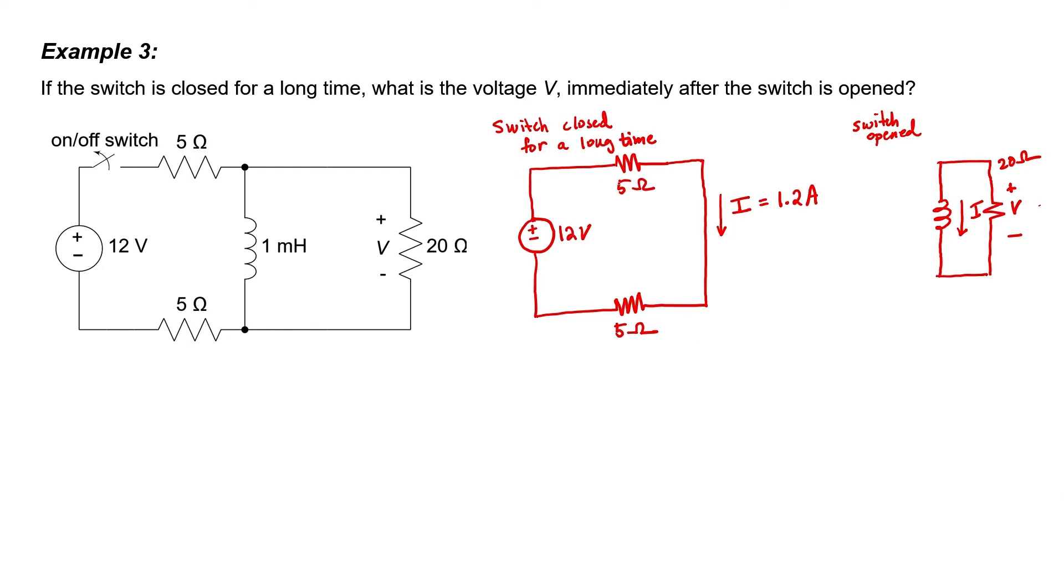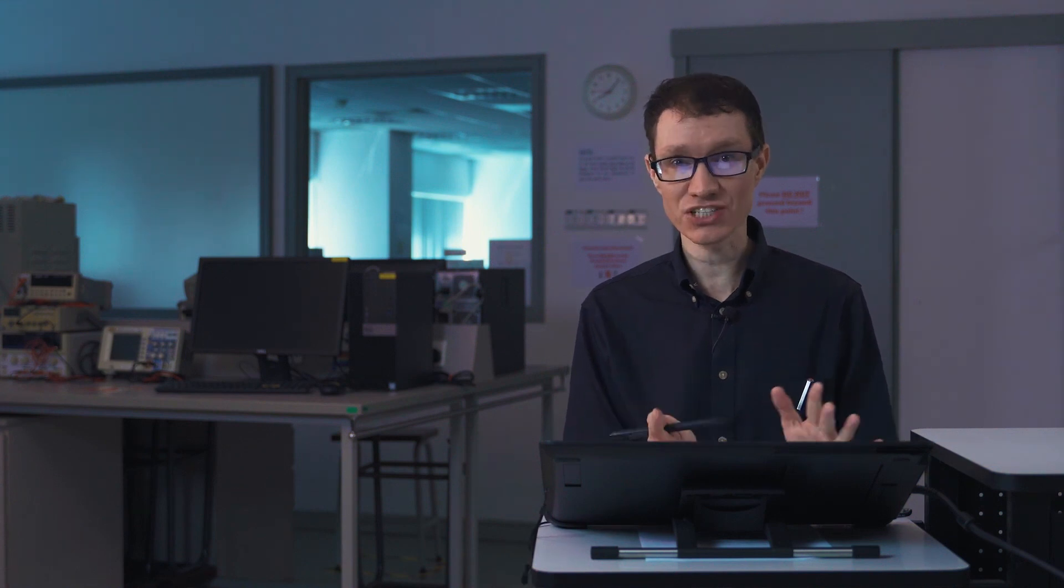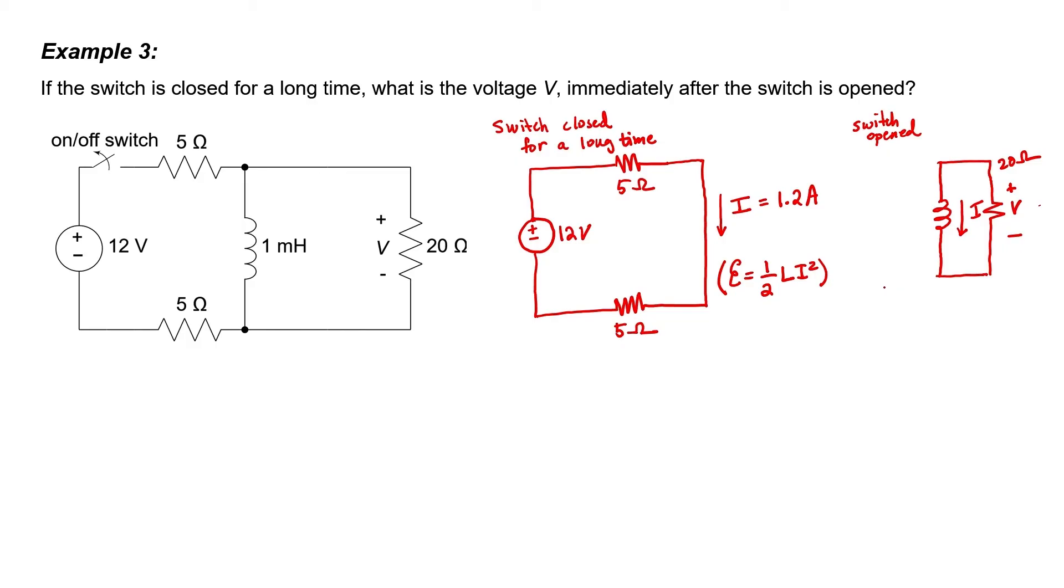Initially, after the switch had been closed for a long period of time, we had a particular energy stored in that inductor. You might recall that the stored energy is given by one-half L I squared. That amount of energy is still in the inductor at the moment the switch is open. It takes time for that energy to leave the inductor. It can't change instantaneously. So the current also cannot change instantaneously. We still have the current I flowing through the inductor, but the current no longer flows around to the 12-volt source. In this case, the current has to flow through that 20-ohm resistor.